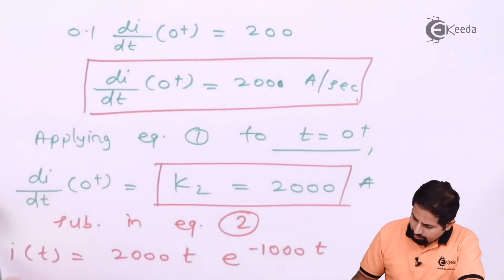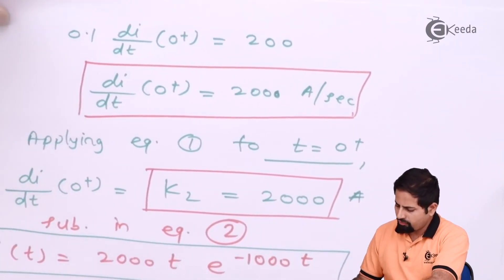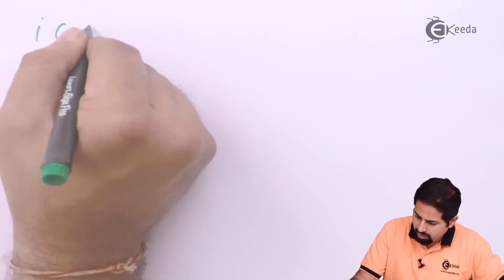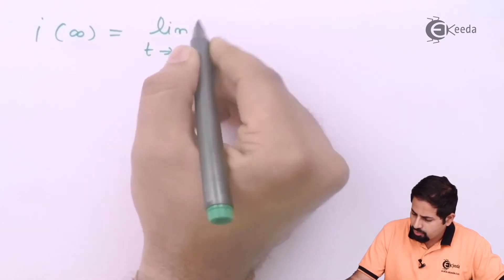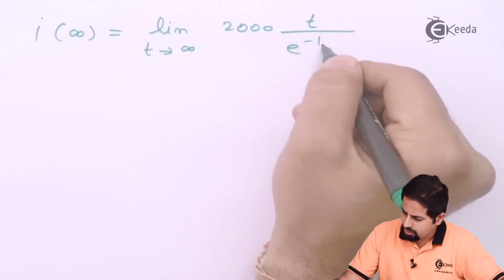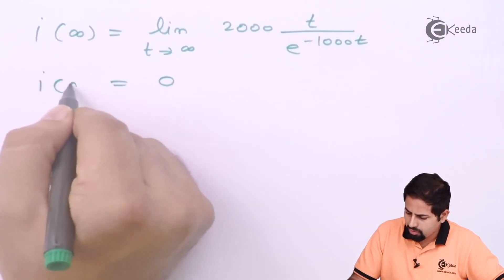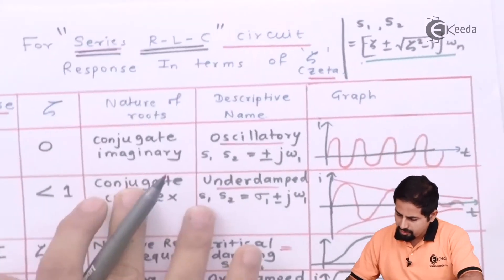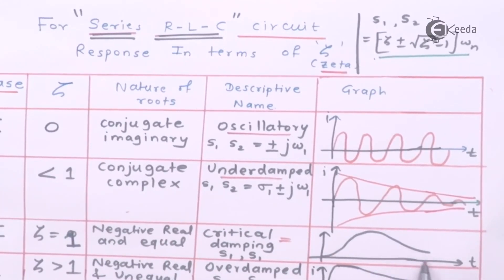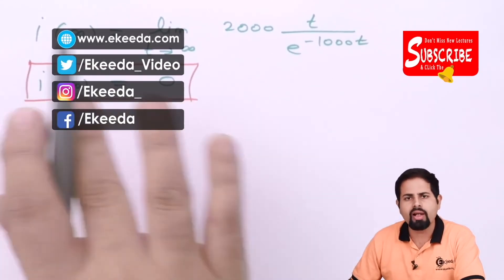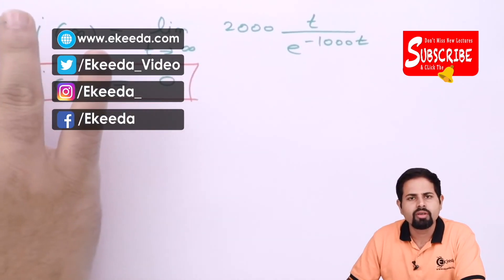Now we need I of infinity. By inspection, putting t equal to infinity: taking limit t tending to infinity of 2000·t divided by e^(1000t) gives 0. So I of infinity equals 0. This is the case of critical damping, and the graph shows the current tends to 0 — so it makes sense that the current at t equal to infinity tends to 0. Thus we have verified this from all aspects and this numerical is completed. Thank you for watching this video. Please subscribe to Ikeda.